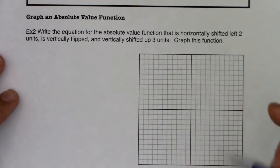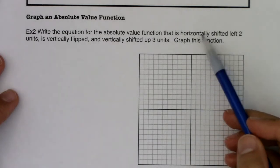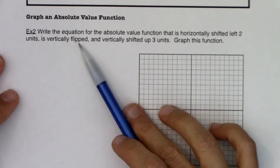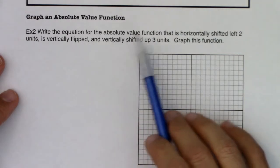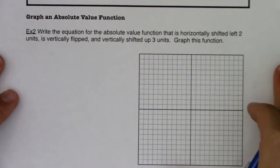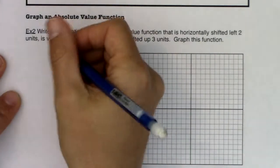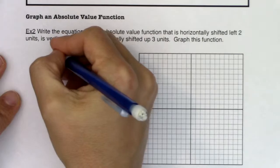write the equation for the absolute value function that is horizontally shifted left two units, vertically flipped, and vertically shifted up three units. And then we need to graph that function. Okay, so I have a bit of transformation to do.